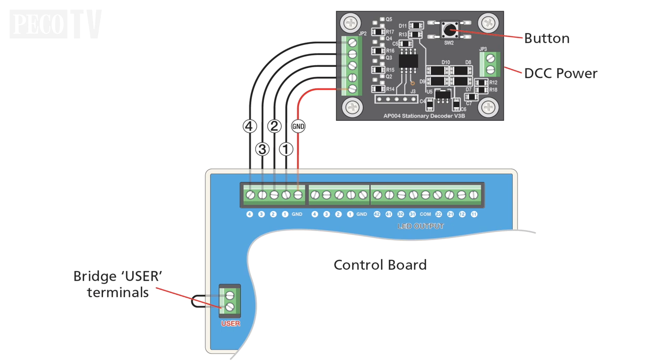To activate the servos using your DCC controller, connect the PLS-135 stationary decoder to your control board using five lengths of wire between the terminals as shown here in the diagram. It's important to note that the PLS-135 is the only decoder capable of working with the smart switch system.